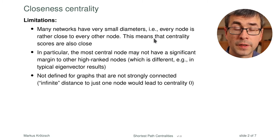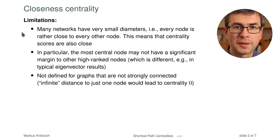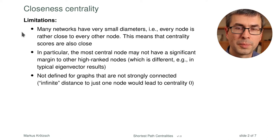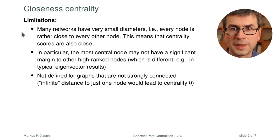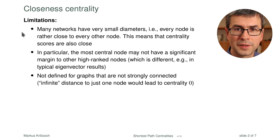Closeness has some limitations. First of all, many networks have a very small diameter, meaning that every node is rather close to every other node. This is the famous, often anecdotal, property of social networks — the six degrees of separation — that every person is connected to every other person in a short distance. You can play that in any social network and it usually comes out to similar numbers.